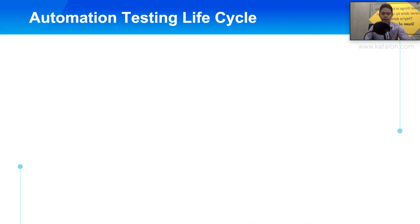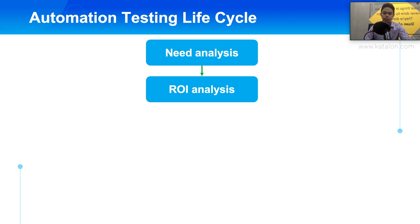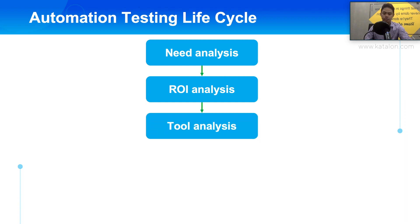Let's take a look at the automation testing lifecycle. In the beginning, we need to do a needs analysis to make sure that automation testing is what we need. Then we do a return on investment analysis to make sure that we have more benefit than the cost we need to pay. Next, we do a tool analysis to make sure that we have the correct tool to deal with all the needs we have when doing automation testing.